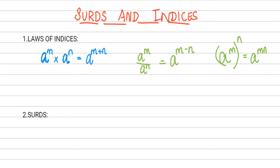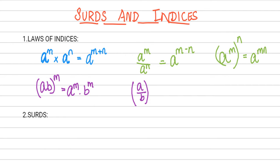When we have two numbers inside brackets, like (a into b) to the power m, the power m is common to both a and b. So we write it as a to the power m multiplied by b to the power m — we distribute the power to each term inside the brackets. This applies to division too: (a/b) to the power m becomes a to the power m divided by b to the power m. And if any number is raised to the power zero, the result is one — anything to the power zero equals one.